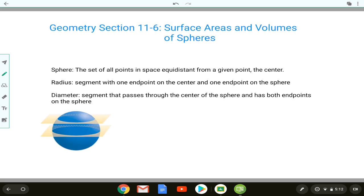So a sphere is the set of all points in space that's equidistant from a given point, the center. The radius is a segment with one endpoint on the center and one endpoint on the sphere. The diameter would be a segment that passes through the center of the sphere and has both endpoints on the sphere.